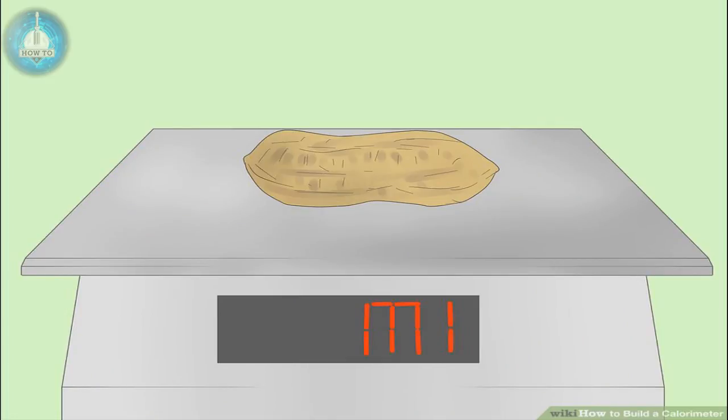Part 2: Using the calorimeter. Obtain some food to test. Weigh the food using an accurate scale, and record the measurement. You will only need a small amount of the food. Good choices include a shell peanut, potato chip, or other high-fat food.